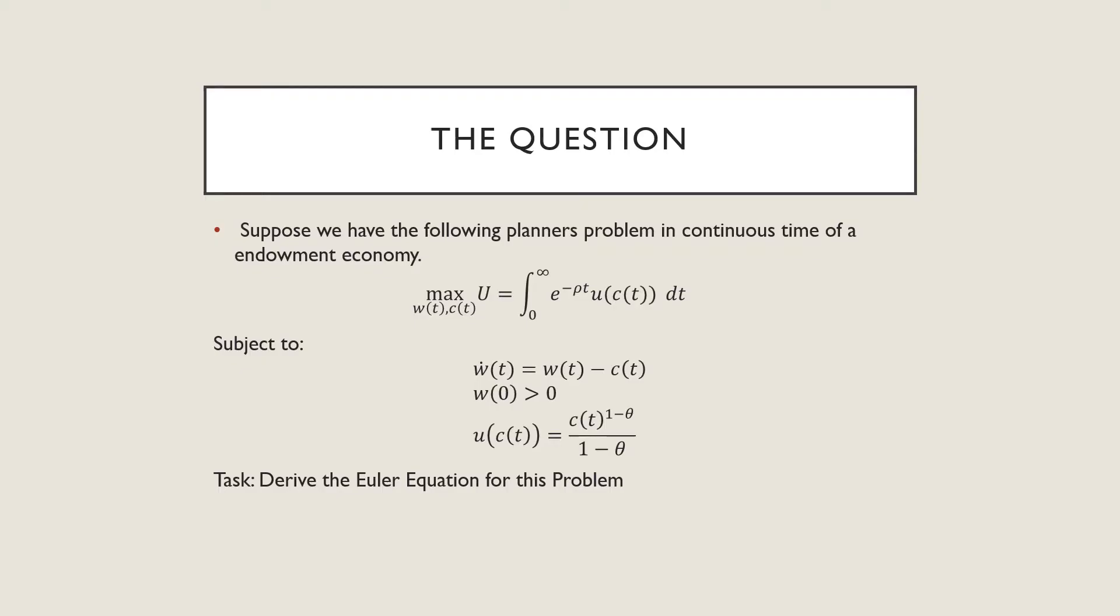So suppose we have the following planner's problem in a continuous time endowment economy. We're maximizing our consumer's lifetime utility with respect to WT, which is the endowment amount, and CT, which is a consumption process. That's going to be subject to our law of motion here, which is WT minus CT. Our initial amount of WT is greater than zero, and our instantaneous utility function is given here.